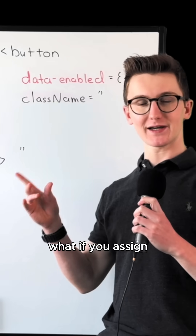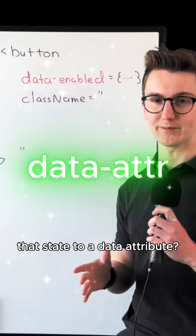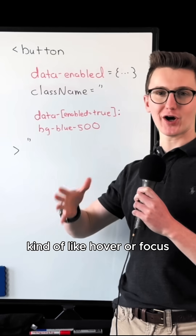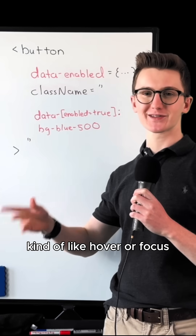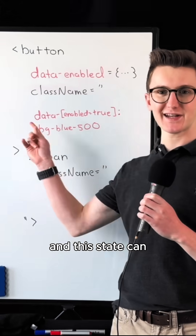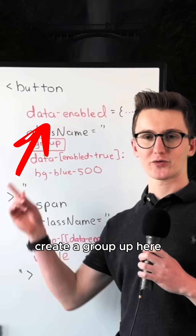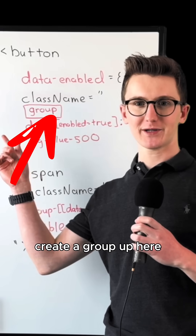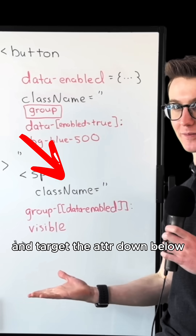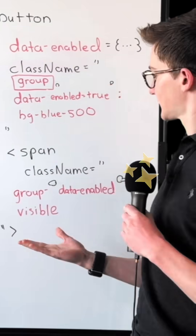What if you assign that state to a data attribute instead? Now you can use it as a prefix, kind of like hover or focus, to add styles. And this state can cascade down to child elements — create a group up here and target the attribute down below.